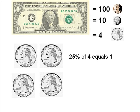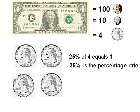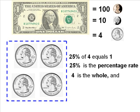So 25% of four equals one. 25% is called the percentage rate. Four is the whole and one is the part.